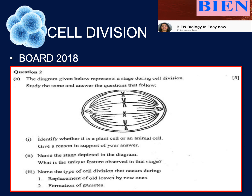The next question is from the 2018 board paper. So you can see that in 2019 a stage question was there and in 2018 also. The questions asked were: identify whether the cell is animal or plant and give reasons; name the stage depicted; state the unique feature observed — that all chromosomes are arranged in the equatorial plane; and name the type of cell division that occurs during replacement of old leaves by new ones. So they have asked about both mitosis and meiosis, and again multiple questions are taken from across the cell division chapter.